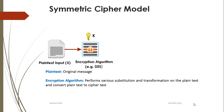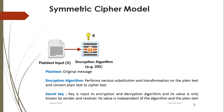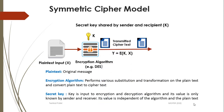The encryption algorithm takes input as a plaintext x and the secret key k. The secret key is the key which is shared by the sender and the receiver. Its value is only known by the sender and the receiver, and its value is independent of the algorithm and the plaintext. By applying the encryption algorithm to the input x and the secret key k, we will generate the ciphertext y.